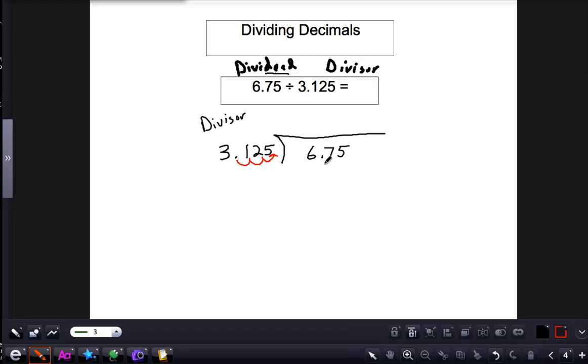And in order to do that, you have to be fair or do the same thing to the dividend and move that also three places to the right, which is like multiplying by a thousand again. But in this case, we run out of places to move it, so we would have to add a zero. So we've got 6750 divided by 3125.